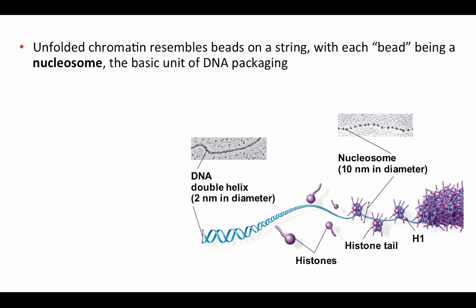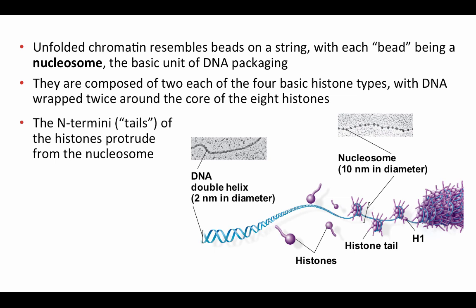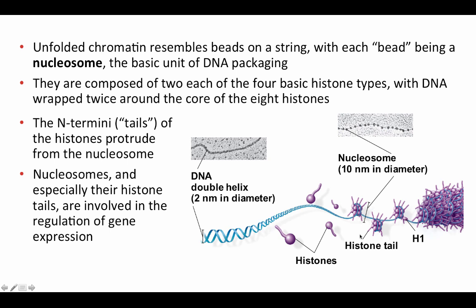Chromosomes fit into the nucleus through an elaborate multilevel packing system. The primary proteins involved are histones. Unfolded chromatin resembles beads on a string, with each bead being a nucleosome — the basic unit of DNA packaging. A nucleosome consists of eight histone molecules (two each of four basic histone types) with DNA wrapped around the core twice. The N-terminal tails of the histones protrude from the nucleosomes and are involved in regulating gene expression by controlling which stretches of DNA are exposed to regulatory molecules.